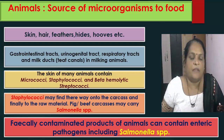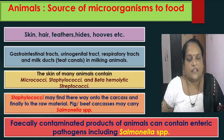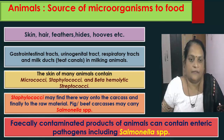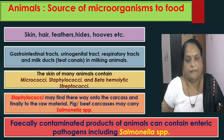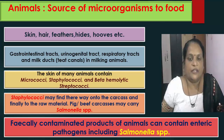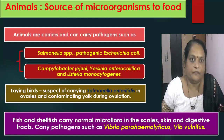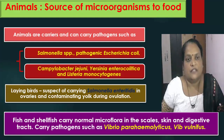The skin of many animals contains Micrococci, Staphylococci and beta-hemolytic Streptococci. Staphylococci may find their way onto the carcass and finally to the raw material. Pig or beef carcasses may carry Salmonella species. Fecally contaminated products of animals can contain enteric pathogens including Salmonella species. Animals are carriers and can carry various pathogens such as Salmonella species, pathogenic Escherichia coli, Campylobacter jejuni, Yersinia enterocolitica and Listeria monocytogenes.